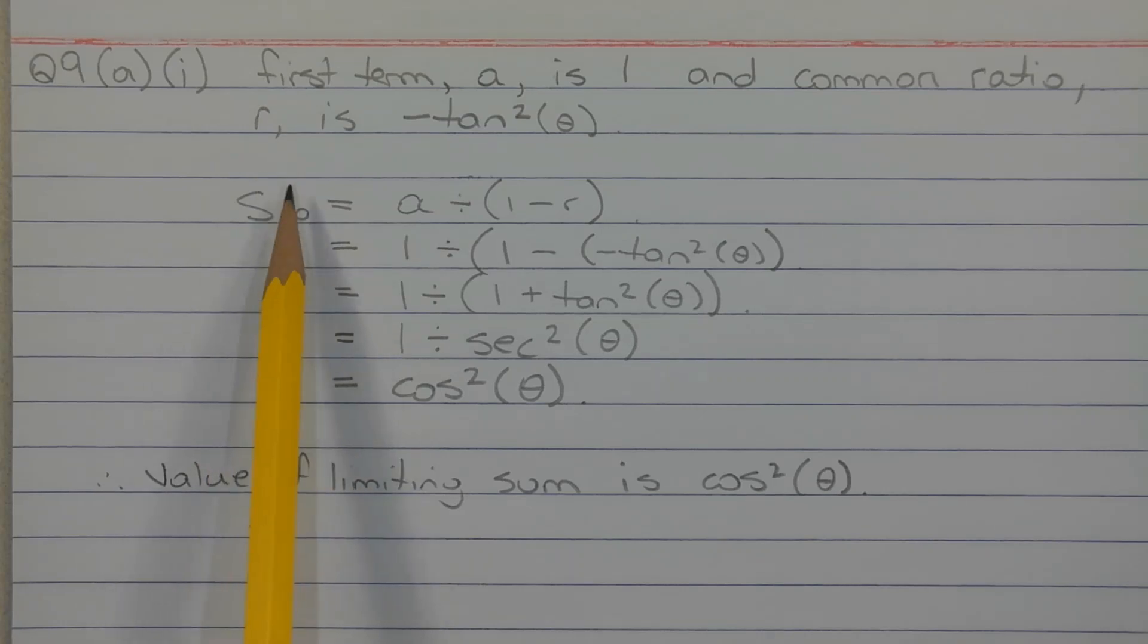Now the limiting sum is given by S infinity equals A divided by 1 minus R, or in fraction form, A over 1 minus R. So substituting the values that we have here and here into the formula,